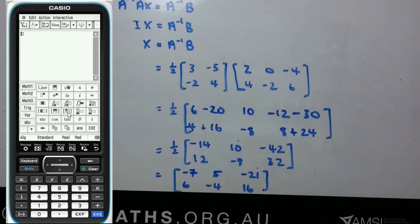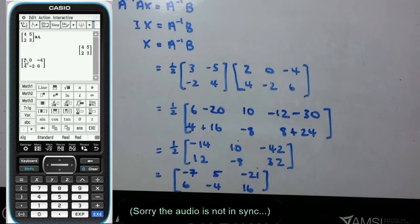So let's just verify all of this on the CAS. What we want to do is define some matrices so we can work with them. The first one I need is A. The second one is B. We have 2, 0, negative 4, 4, negative 2 and 6. So we'll just store that as B.